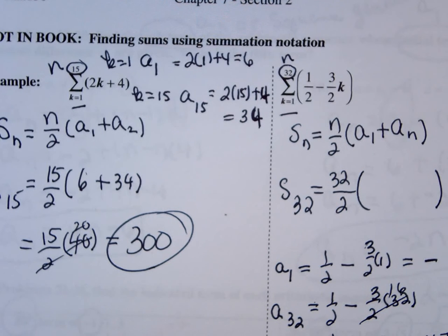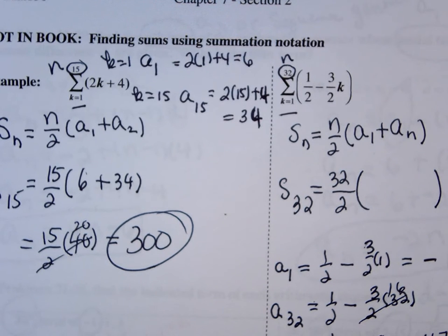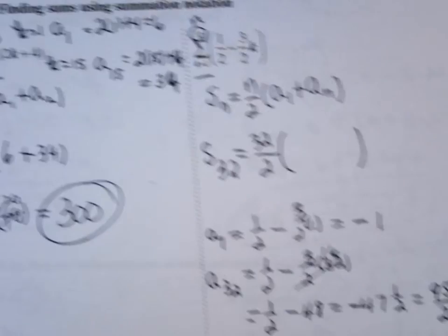So this is minus 47 and 1 half. And 47 times 2 plus 1 is 95. It's 95 halves.